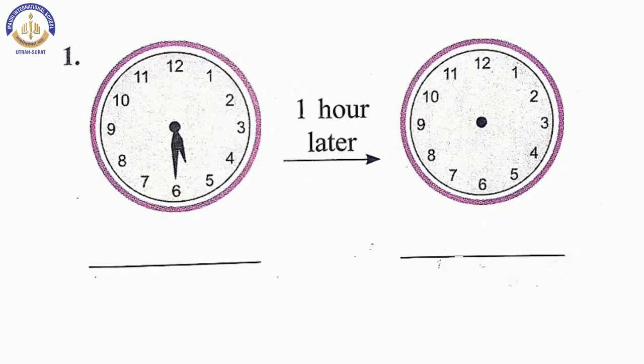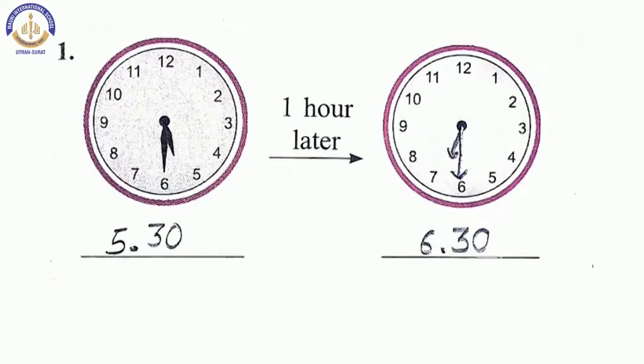So, first one is see here what is time? The minute hand is on six and our hand is between five and six so our time is five point thirty and one hour later our time will be six point thirty. So, draw the hand like this and write the time in your textbook.